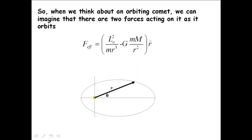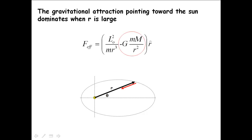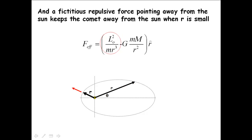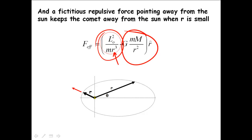If we were thinking about an orbiting comet, we can imagine two forces acting on it: the gravitational force pulling it toward the Sun, and this fictitious repulsive force pushing it away. Since the repulsive term goes as r⁻³, if r is small this term dominates, and for large r the gravitational term dominates. So people think of angular momentum as creating a repulsive force — it's really fictitious, but that's how we think about it in the effective potential framework.